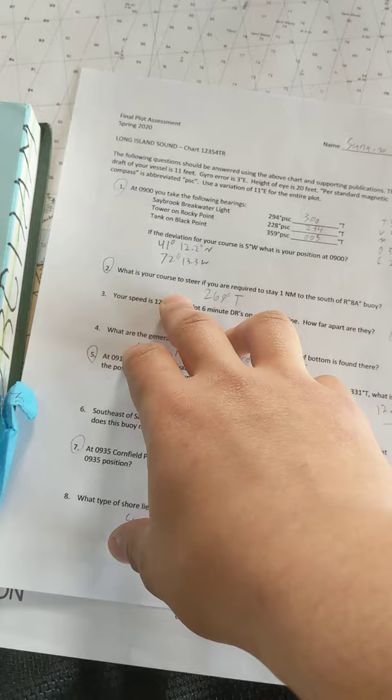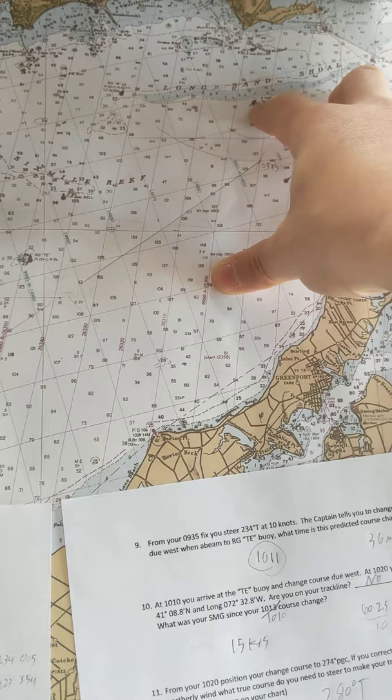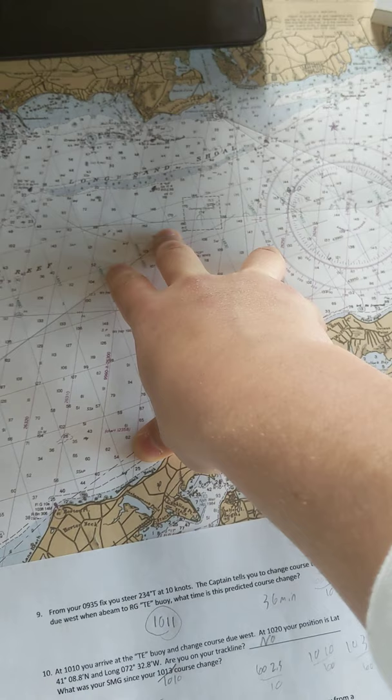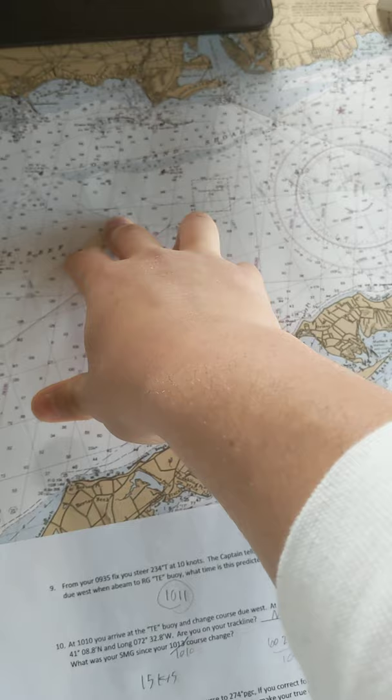Making this my coordinates of that position. To find my course to steer, I had to take a 1 nautical mile range of the R8A buoy, drew a course from 0900 to the R8 range of 1 nautical mile, and drew that DR track line.